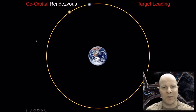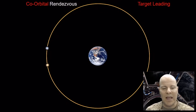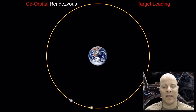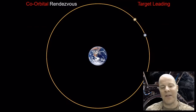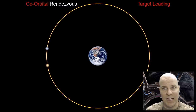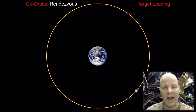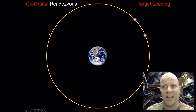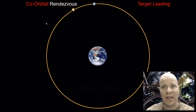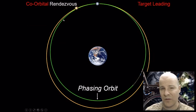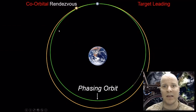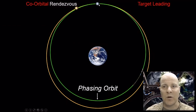How do I catch up with something that's ahead of me if we're both on the same orbit? Intuitively you might think: just speed up. But if you speed up, you've increased the size of your orbit, which means it takes longer to get back around — you actually drift further behind. So in order to catch something ahead of you, you jump onto a smaller orbit. You take a shortcut to catch up. We call this smaller orbit a phasing orbit.